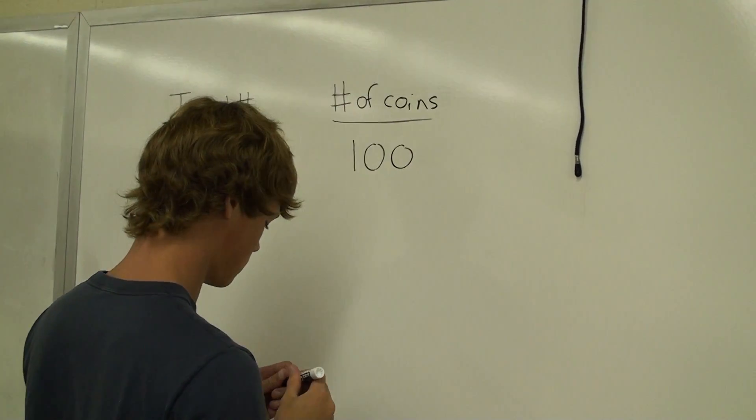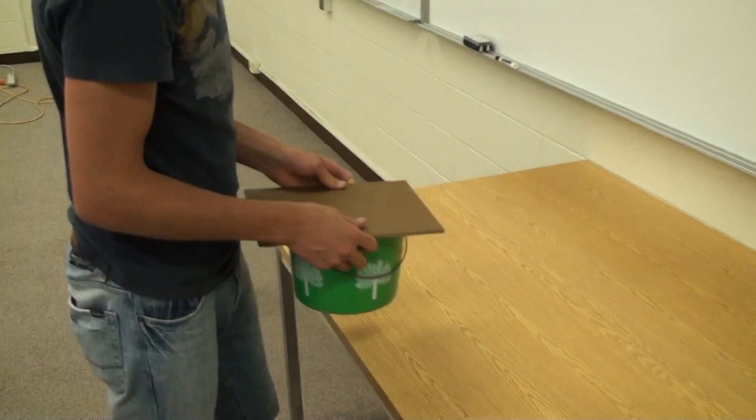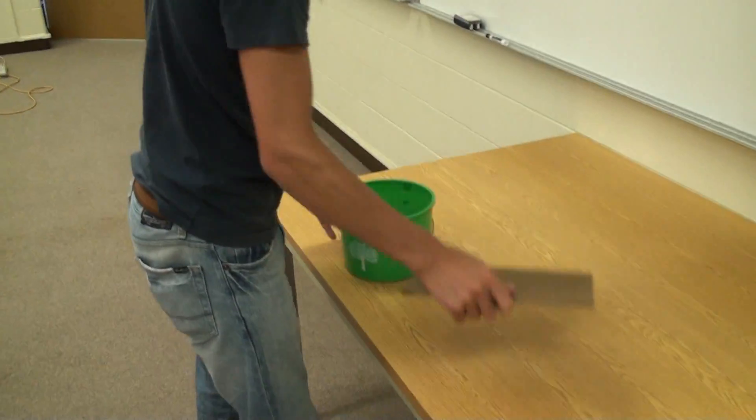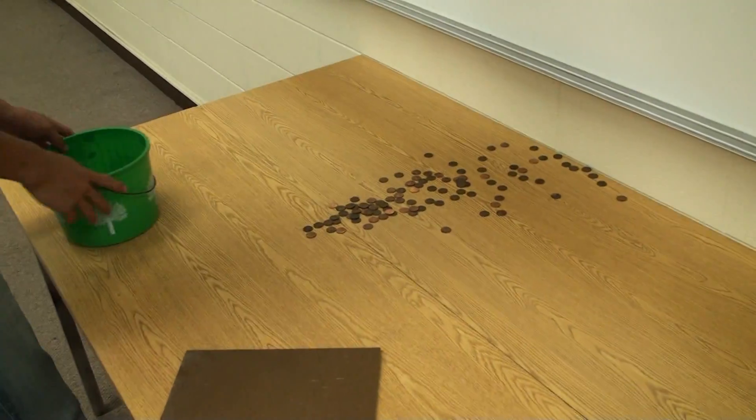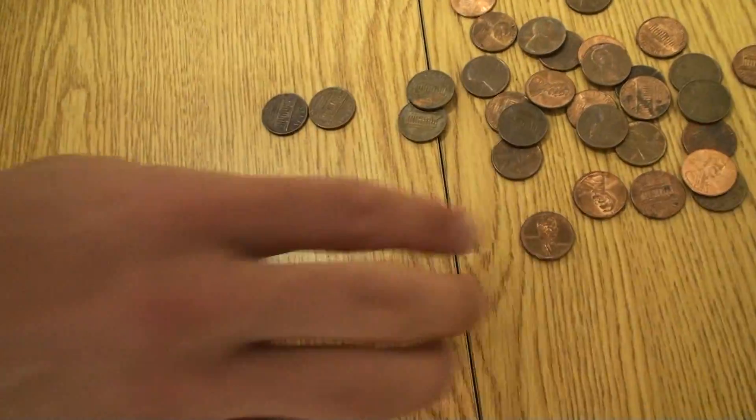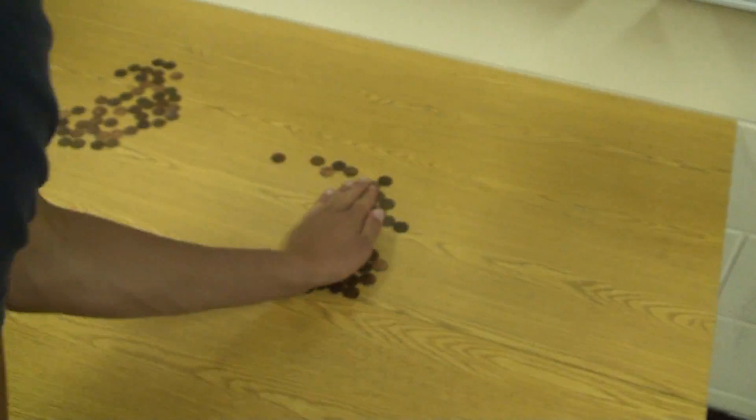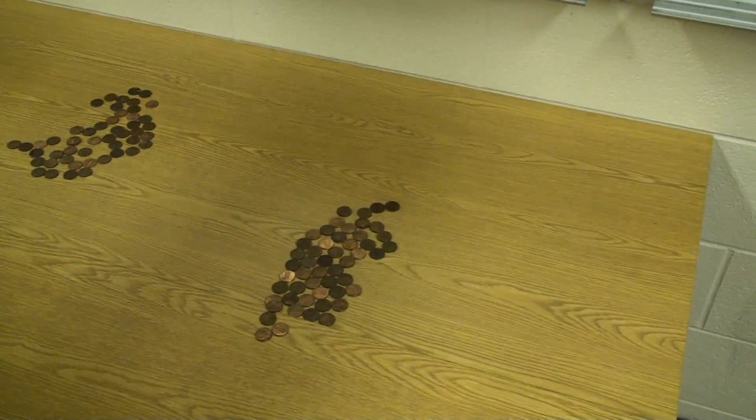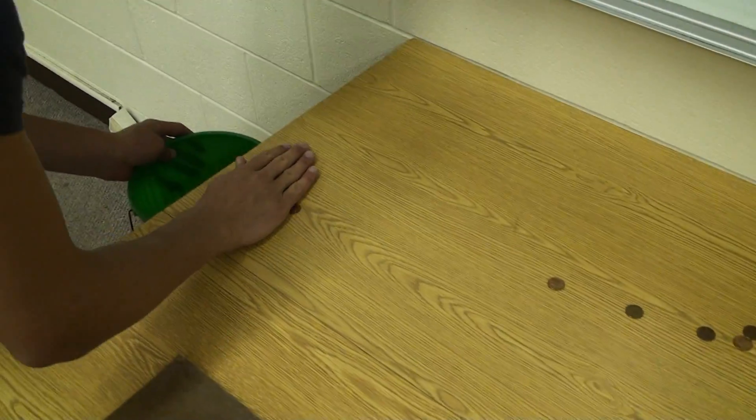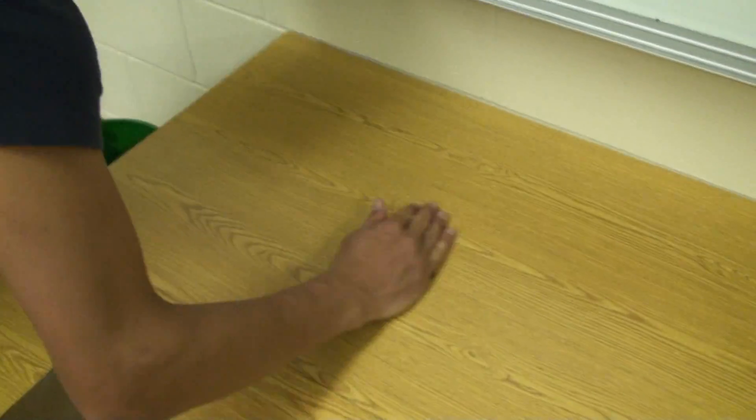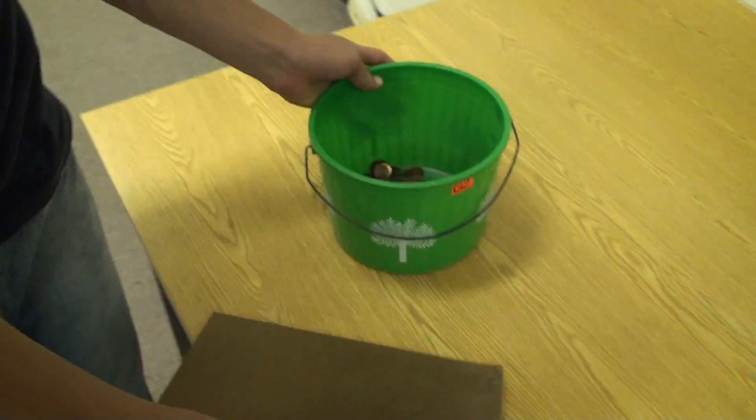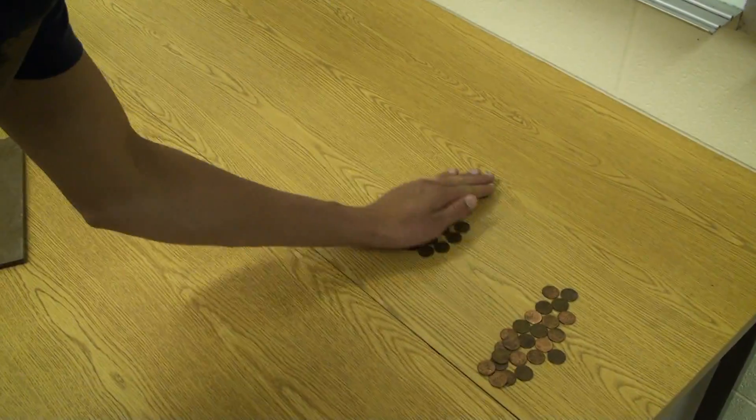While you are waiting for the Geiger counter to complete its 1 hour of work, you can perform a simulation with coins and dice. Start with 100 coins, flip all the coins at once, and separate out the heads from the tails. Keep track of the number of tails remaining, collect up all the remaining tails, shake them vigorously to reset them, and flip them over again. Proceed in this way until there are few tailed coins remaining.